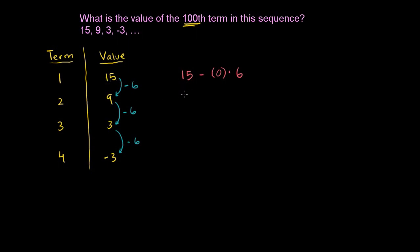What's the second term? This is 15. We just subtracted 6 once, or you could say minus 1 times 6. Or you could say plus 1 times negative 6, either way. We're subtracting the 6 once.